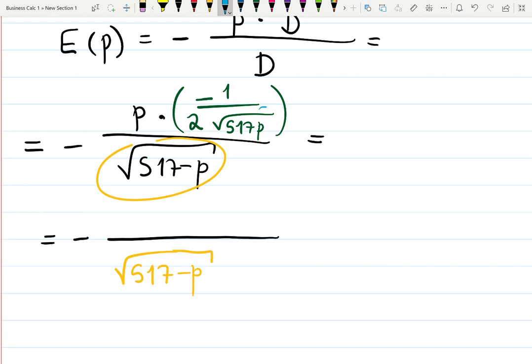Whatever was in the denominator of the fraction on top should go to the denominator as well, because we're dividing by 2√(517 - p). So this part will go to the denominator as well: times 2 and √(517 - p).